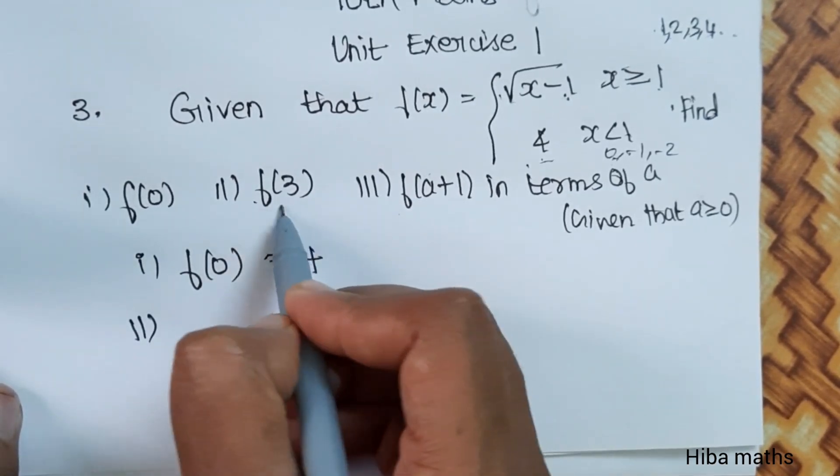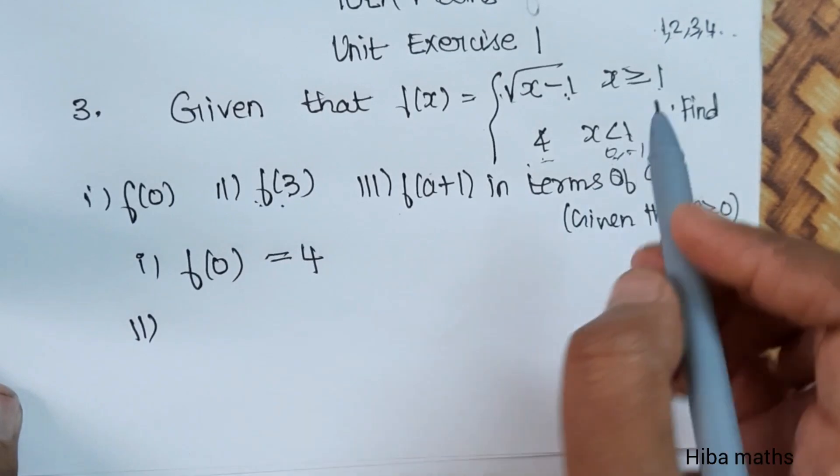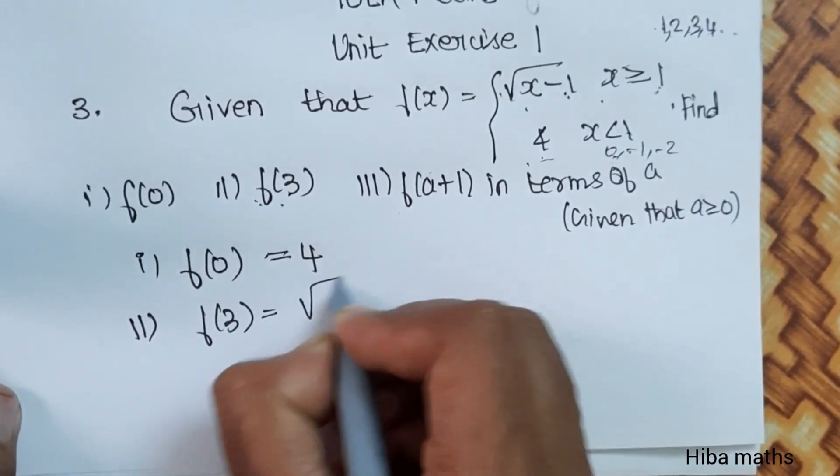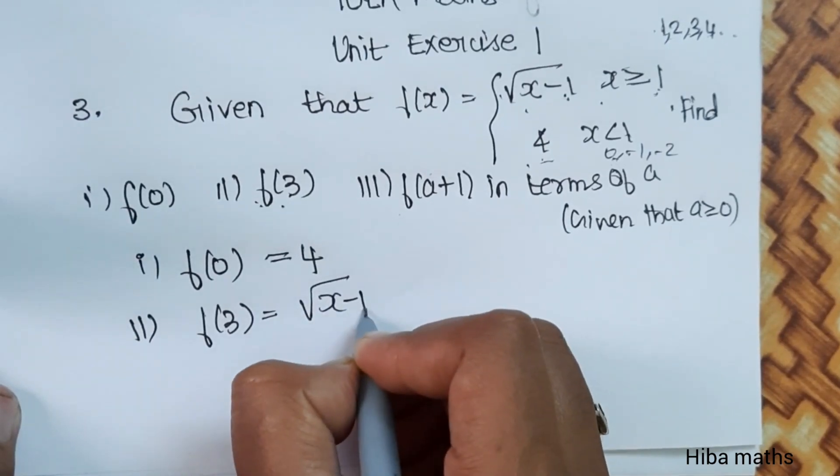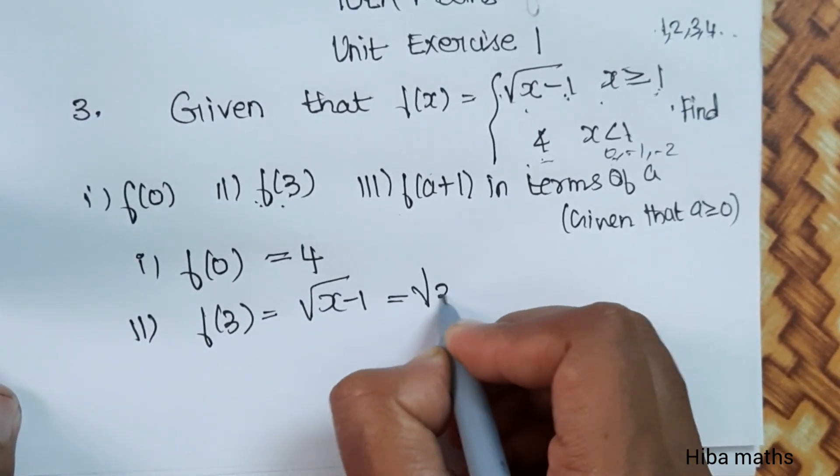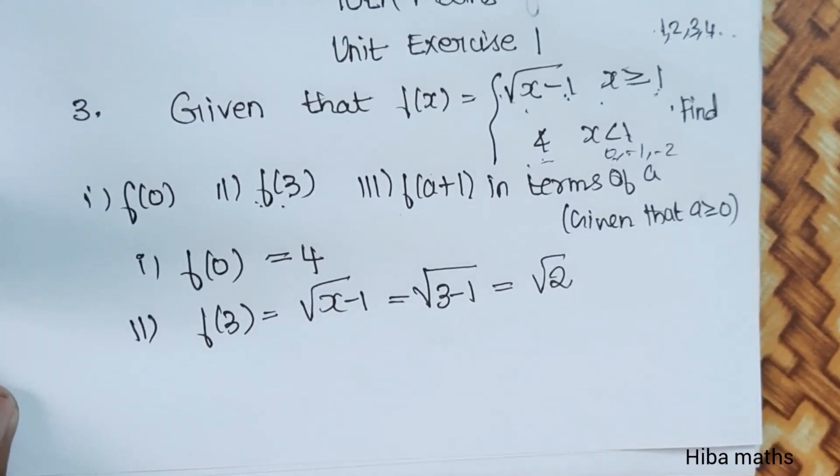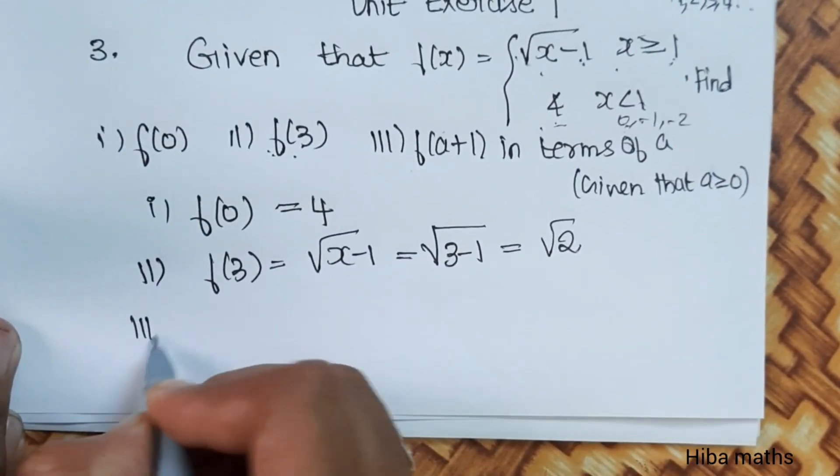f(3). Since 3 is greater than 1, we use the first function. f(3) is root of x minus 1. Substitute x equals 3: 3 minus 1, which is 2. So root 2.